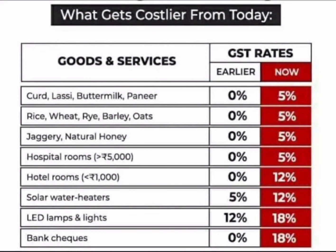Also, hospital rooms, hotel rooms, solar water heaters will see a GST increase from 5% to 12%. LED lamps and lights previously at 12% GST will now attract 18% GST. Bank cheques previously at 0% GST will now attract 18% GST. These are the key rate changes effective July 18th.